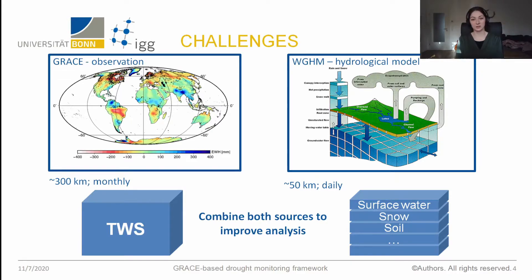Another approach is to use hydrological models. These models have a finer resolution — for example 50 kilometers — and they disaggregate into different vertical storages. However, these models do not perfectly represent reality because they rely on underlying assumptions and are based on uncertainties of forcing data. So we combine both sources to improve our analysis.